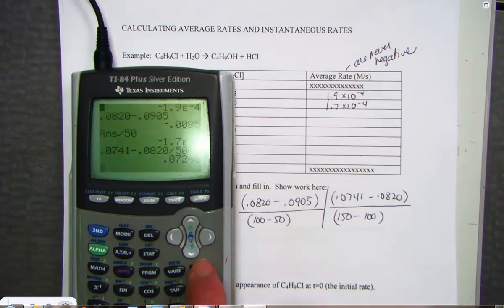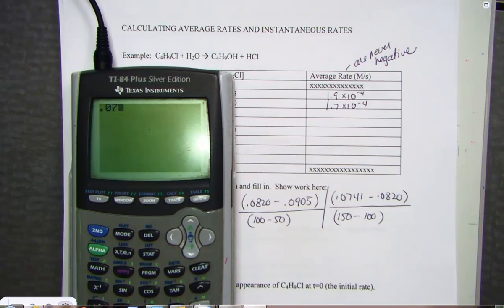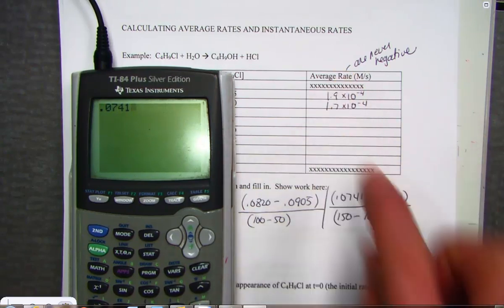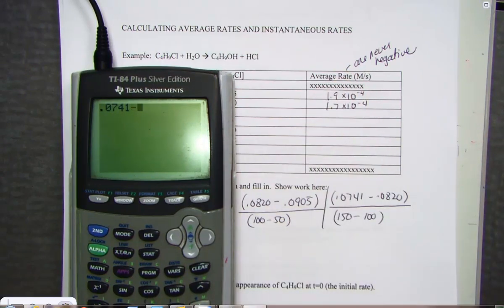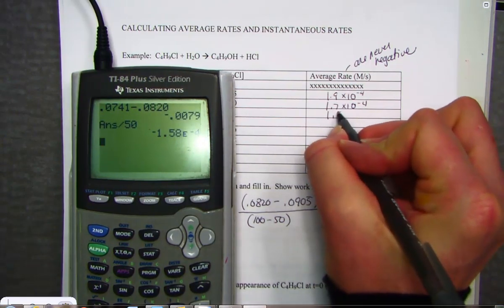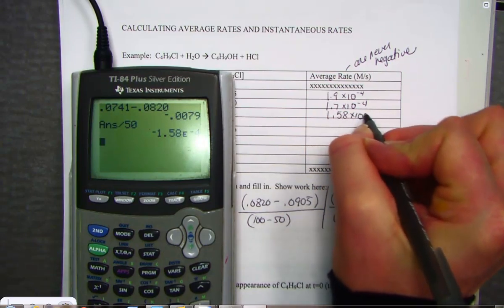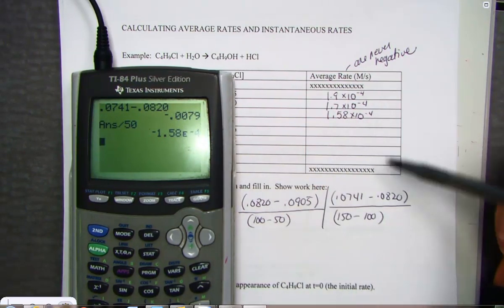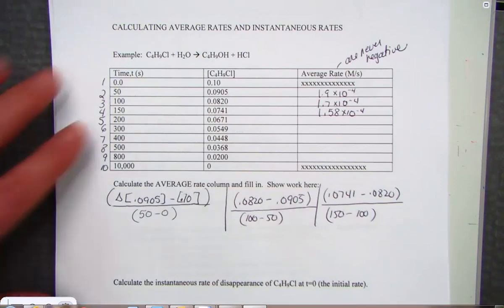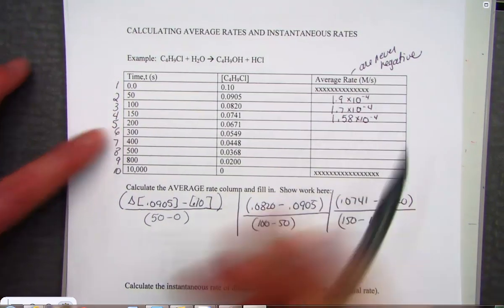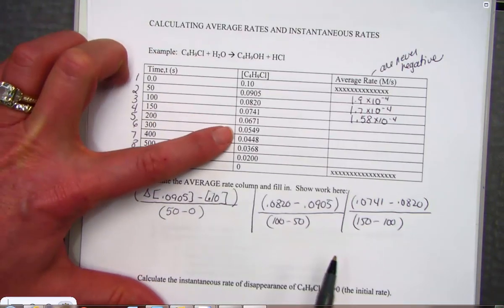I think I might have hit that wrong. Hang on. 0.0741. It didn't match the other number so I knew I had made a calculator mistake. Equals. Divide by 50. And now that number makes sense. 1.58 times 10 to the negative fourth. So clearly I had made an error in the calculation because it didn't match what I was calculating before. Keep going.